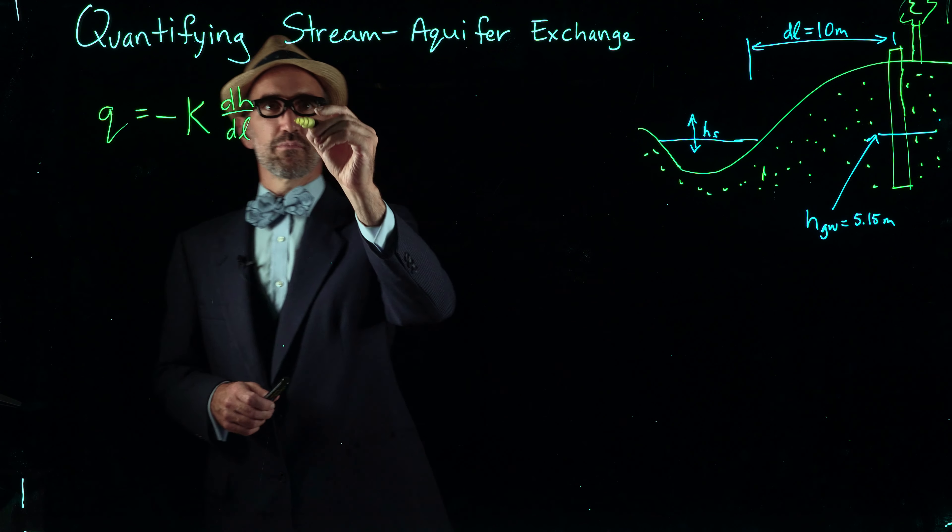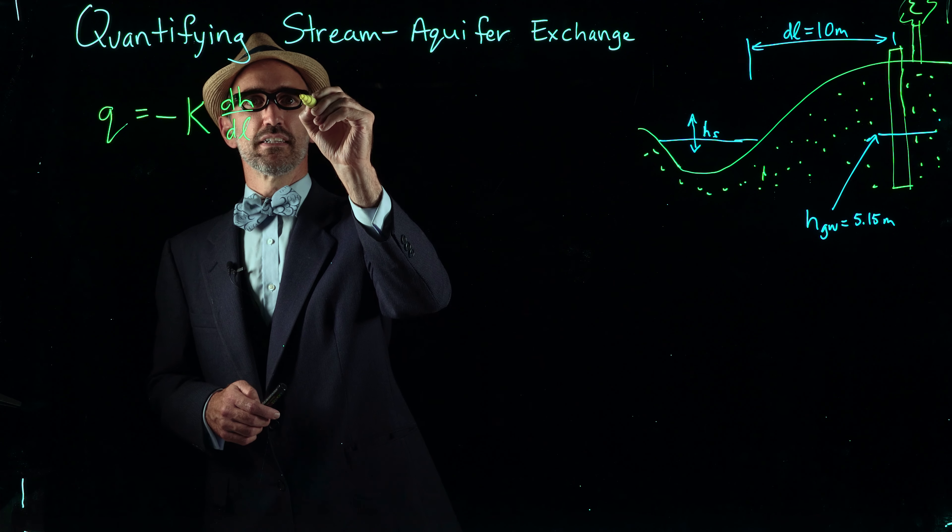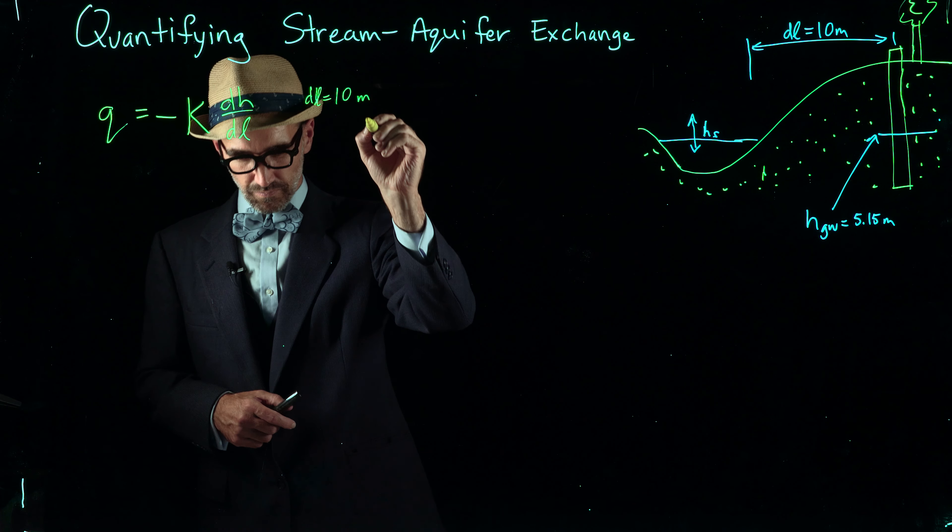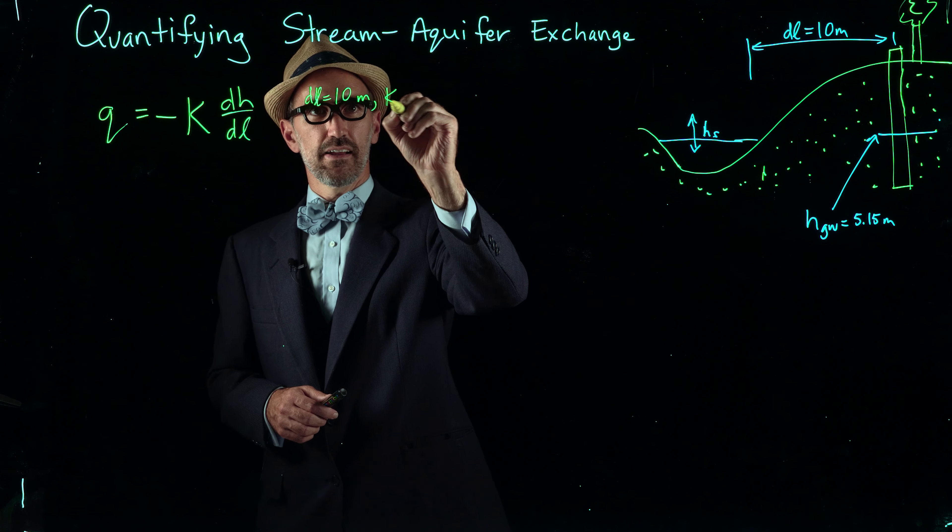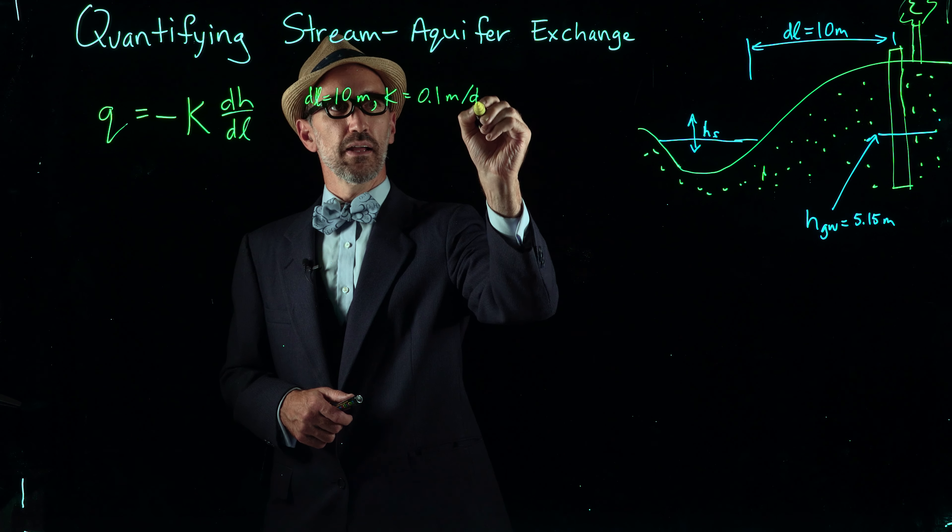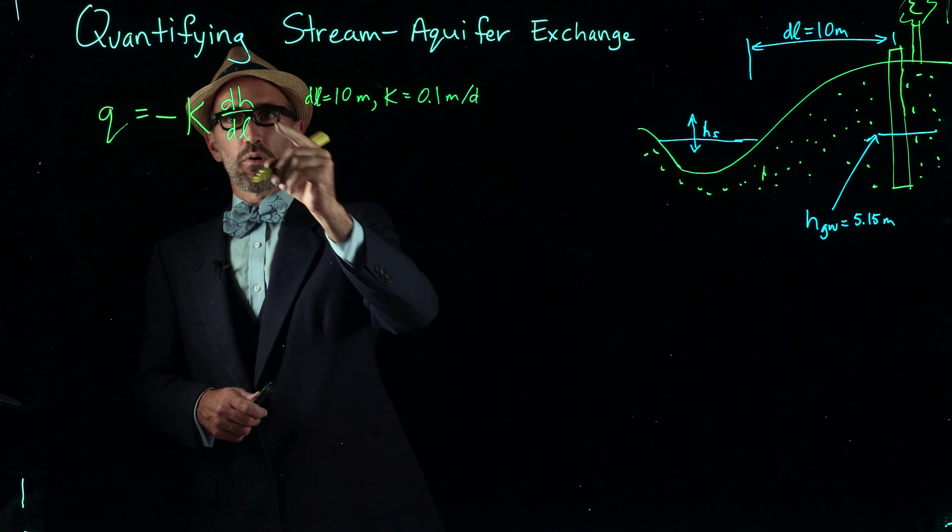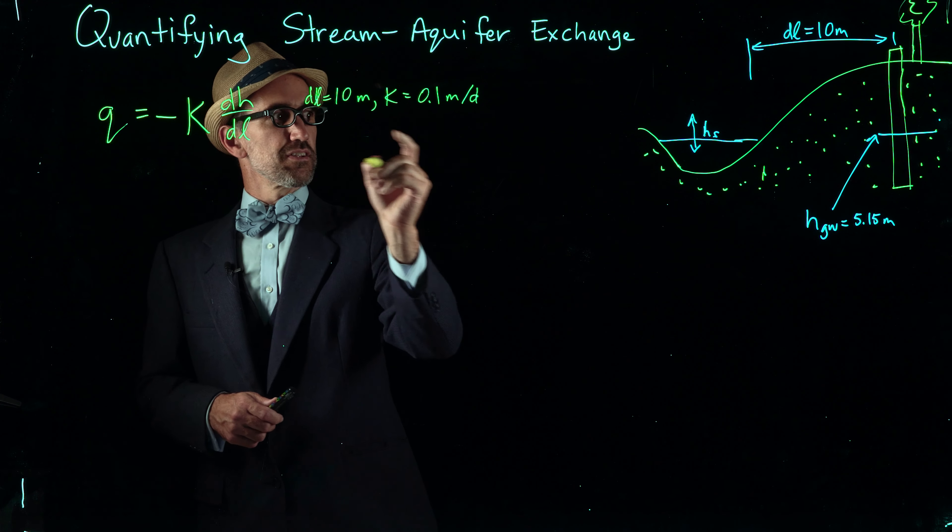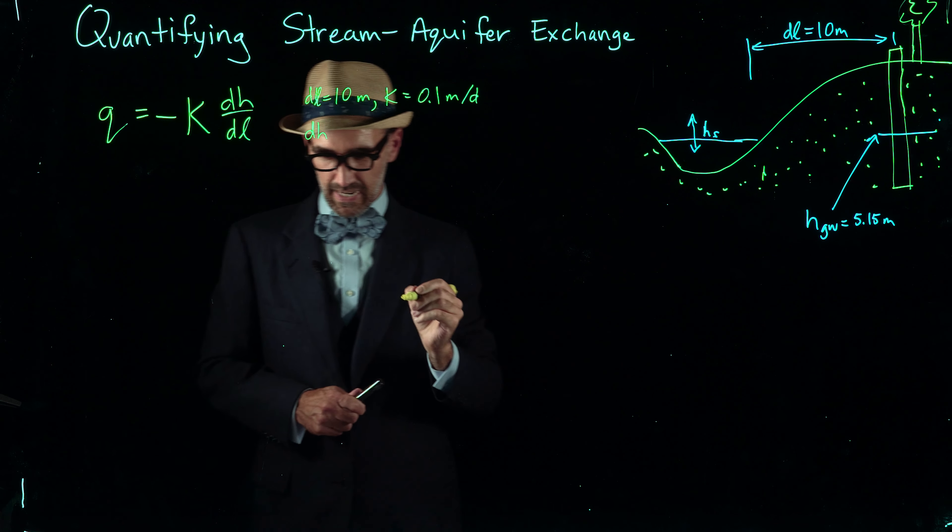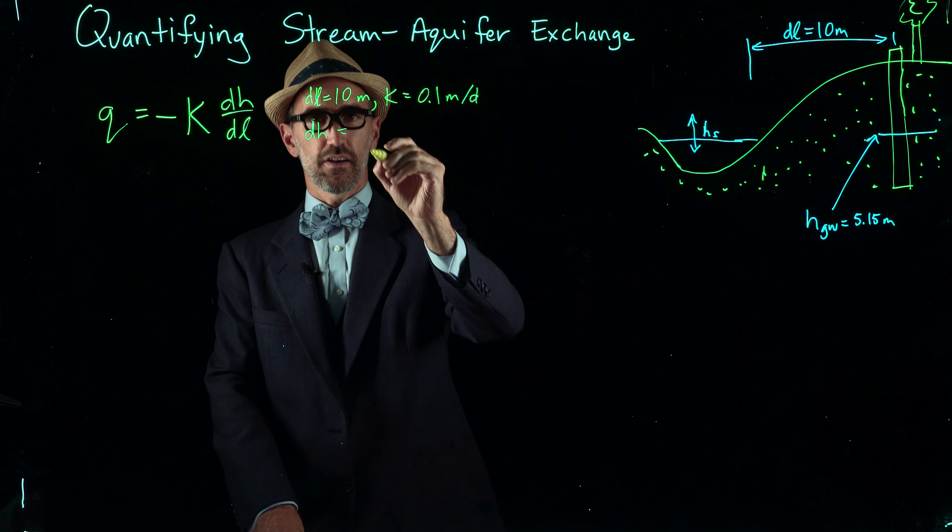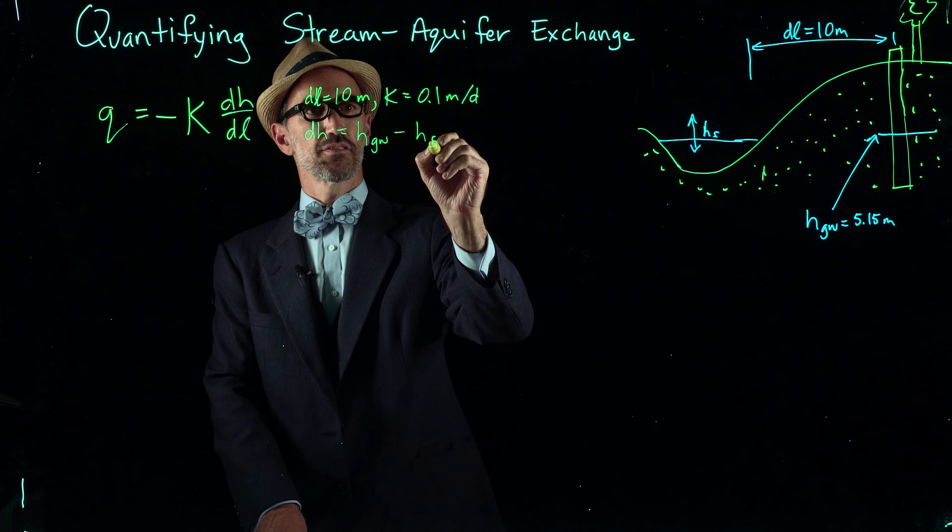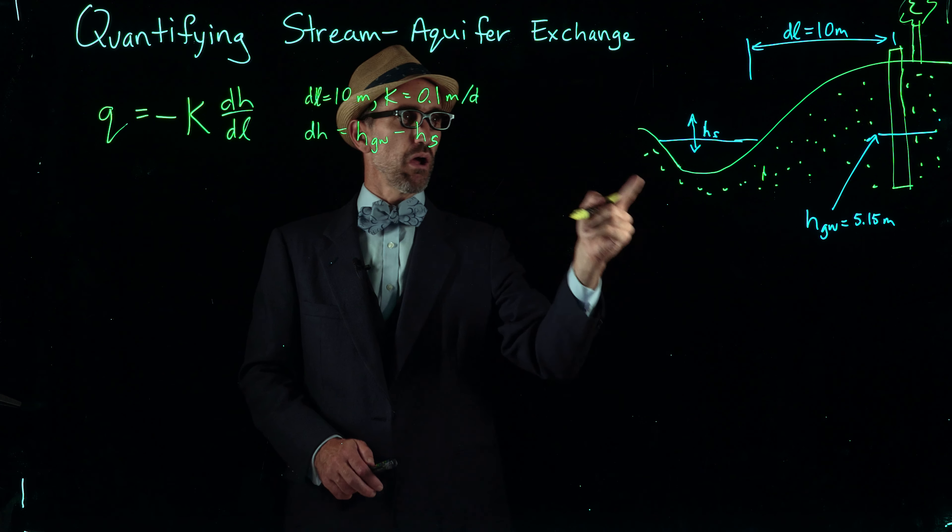As I mentioned, our dl is equal to 10 meters, our k is equal to 0.1 meters per day. What we want to calculate for each of the times is our dh, where dh is equal to the height of the groundwater minus the height of the stream. This is driving the groundwater flow between the aquifer and the stream.